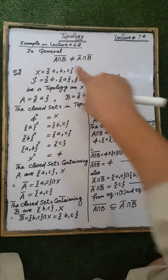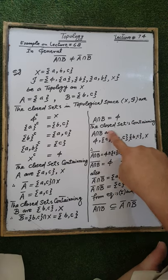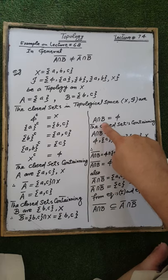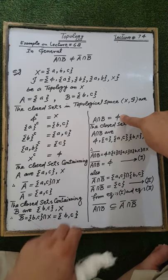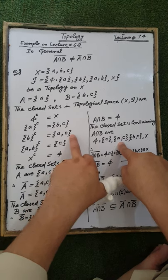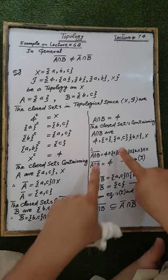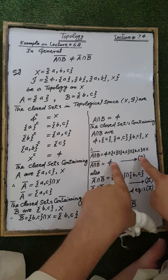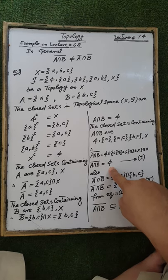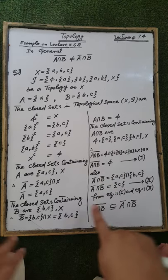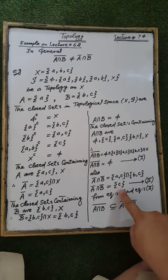Now, the intersection of A and B is the empty set — that is, there are no common elements in set A and set B. The closed sets containing A intersection B, i.e., the closed supersets of the empty set, are: the empty set, the set containing element C, the set containing A and C, the set containing element B and C, and the ground set X. The intersection of all these closed supersets of A intersection B is the empty set, which is the closure of A intersection B.